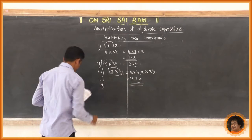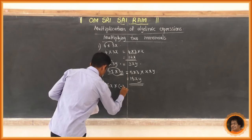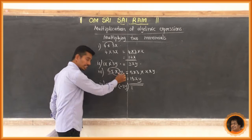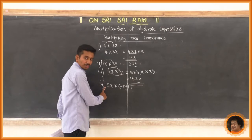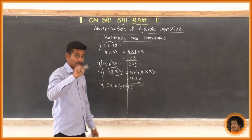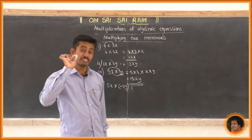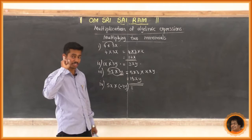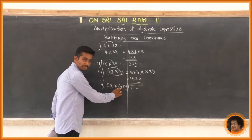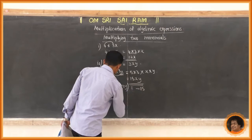Now: 5x into minus 3y. Be careful — the difference is the sign. 5x has a positive sign, minus 3y has a negative sign. Plus into minus gives a negative product. So 5 into 3 is 15, x into y is xy, and the answer is minus 15xy.